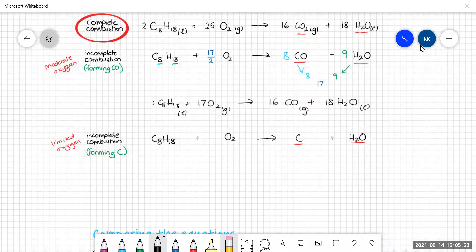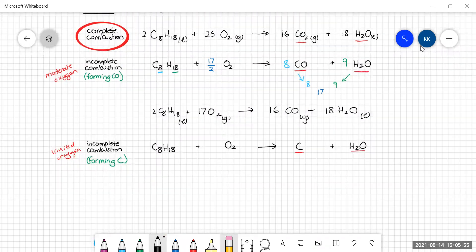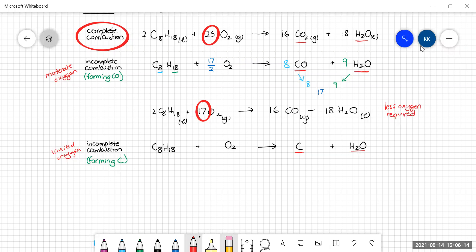You might notice though, that comparing the amount of oxygen in the equations, there's less oxygen required for an incomplete combustion. So less oxygen required here. And that's why an incomplete combustion reaction occurs when you don't have plenty of oxygen.